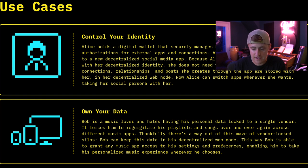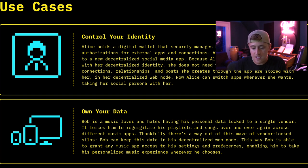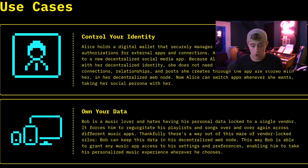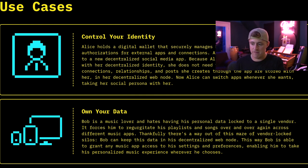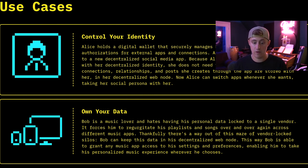It says Bob is a music lover and hates having his personal data locked to a single vendor, forcing him to regurgitate his playlists and songs over and over across different music apps. Thankfully, there's a way out of this maze of vendor-locked silos. Bob can keep his data in his decentralized Web node, and is able to grant any music app access to his settings and preferences, enabling him to take his personalized music experience wherever he chooses. That's basically like saying the Spotify playlists I get in my daily mixes — I can only get those on Spotify, not on Apple Music, YouTube, or SoundCloud. When you jump to other apps, you're not getting the same experience. But with Web 5, when your data is with you and it's decentralized, all of these apps will be able to understand what you like and curate playlists and song suggestions that are specifically for you.